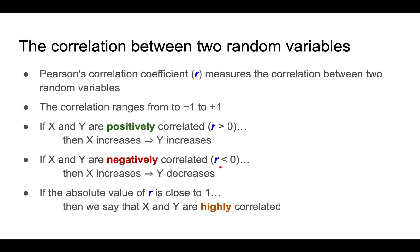If X and Y are negatively correlated (R less than 0), then as X increases, Y decreases. And if the absolute value of R is close to 1, then we say that X and Y are highly correlated.